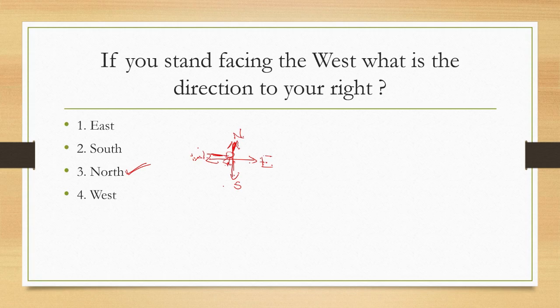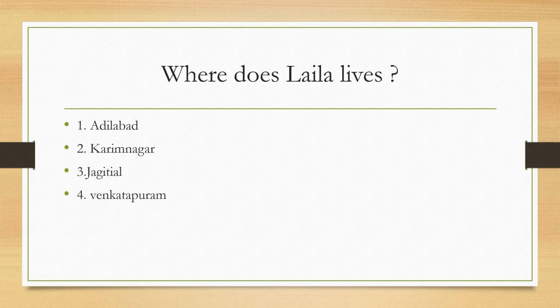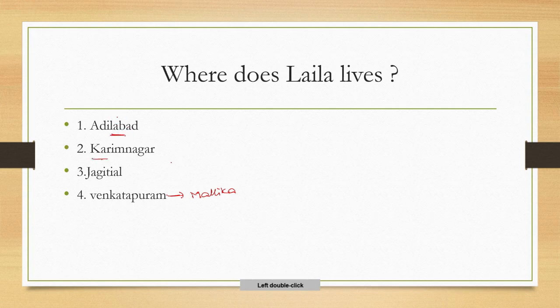The next question: where does Laila live? We already discussed that Mallika lives in Venkatapuram. The options for Laila are Adilabad, Karimnagar, and Jagityal. The correct answer is Adilabad — Laila lives in Adilabad. So in this lesson we have two characters: Mallika, who lives in Venkatapuram village, and Laila, who lives in Adilabad.